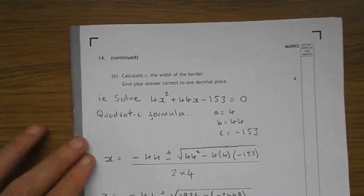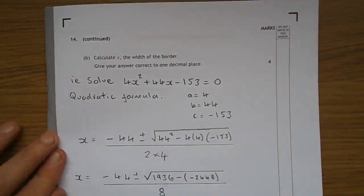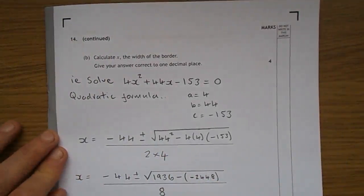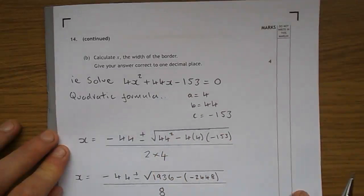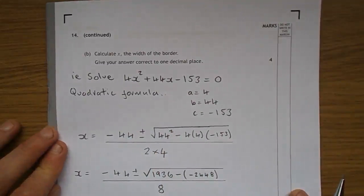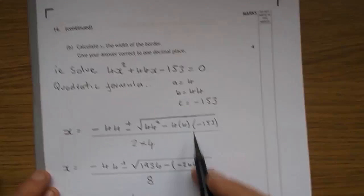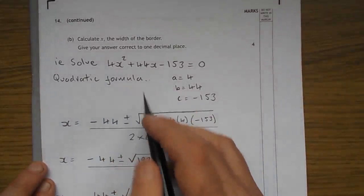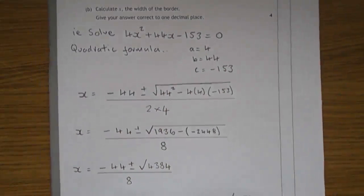And on to question 14B. Calculate X the width of the border. In other words, solve 4X squared plus 44X, take 153, gives 0. This is all about the quadratic formula, as I've written there, where A is 4, B is 44, and C is minus 153.